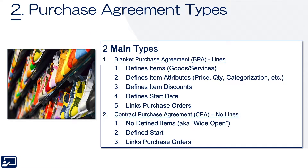Second topic: purchase agreement types. There are really two types — blankets and contracts. There are some other types, but these are largely the two most important, and they revolve around lines or no lines. The most consistent challenge is understanding which agreement type to use for which transactions. Largely, you use contract purchase agreements, or CPAs, when everything you want is going to be bought under that contract. Most notably, it defaults on the REC, can't be taken off the REC, and if there are multiple, it defaults to the newest open.